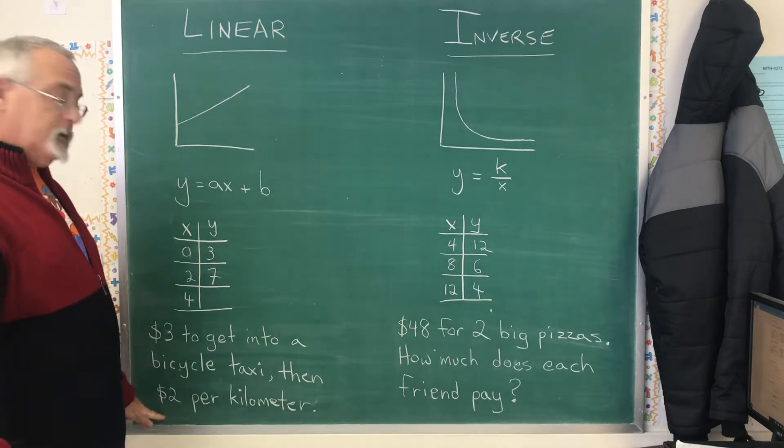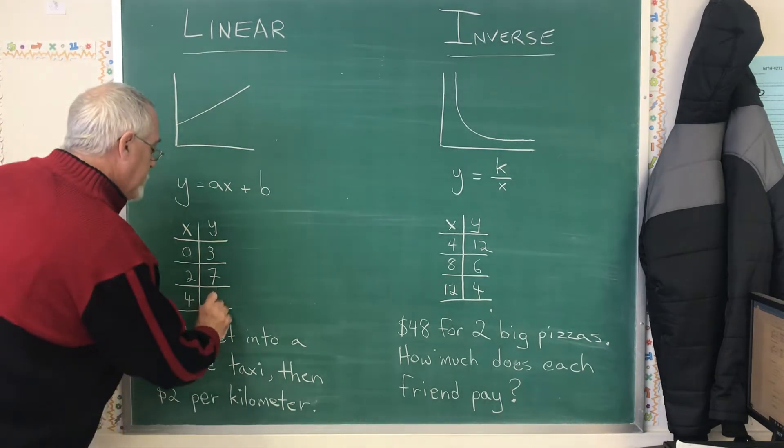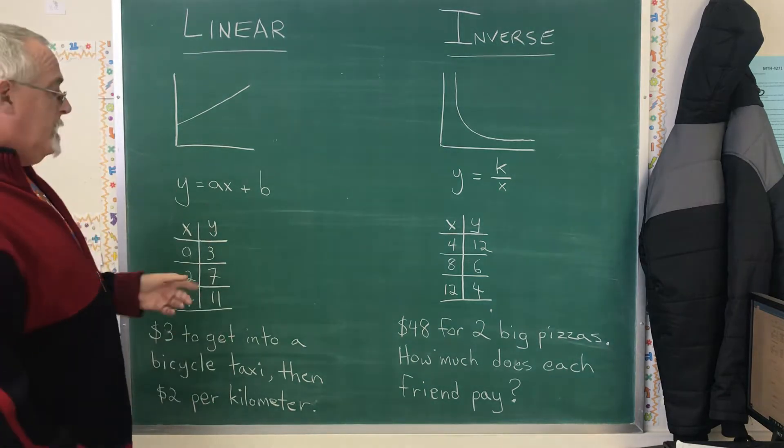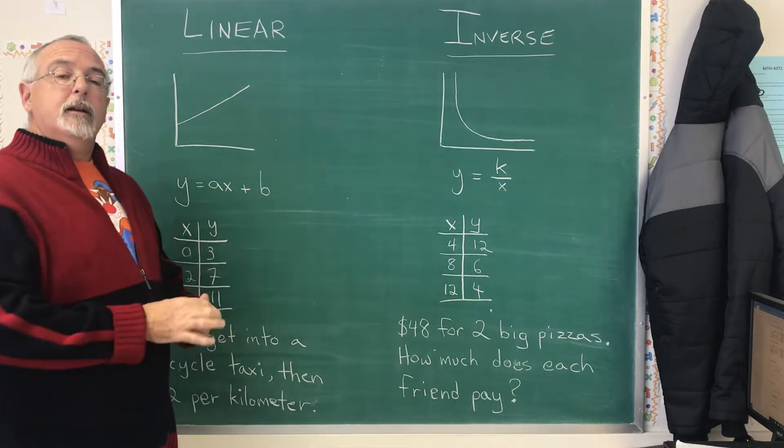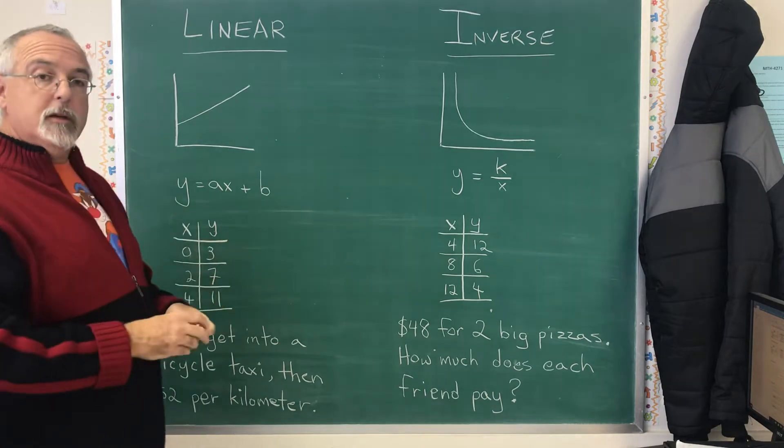4 kilometers times $2 is 8, plus the 3 is 11, I have a third point. Now we can start going our tricks with the table of values to see which of these situations we have.